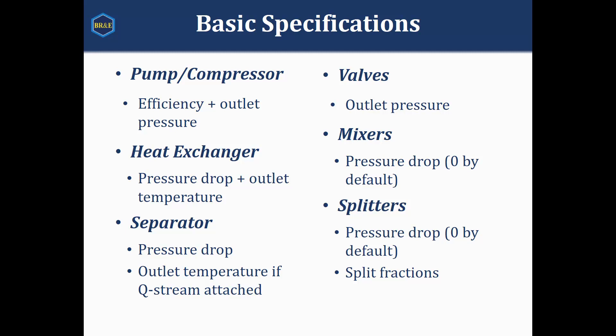Moving on to some other common blocks: for pumps and compressors, as mentioned, we're going to set an outlet pressure, and then there's going to be an efficiency of the block that we will need to set inside the block itself. For heat exchangers, there will be a pressure drop specified inside the block, and in most cases we'll be setting an outlet temperature. Separators also have a pressure drop inside of them.